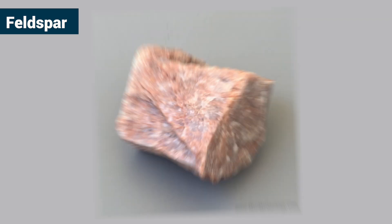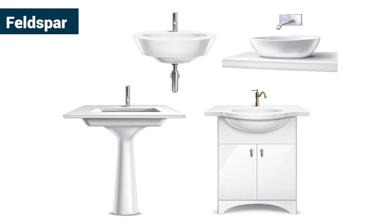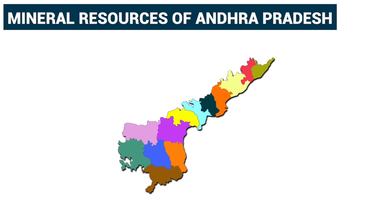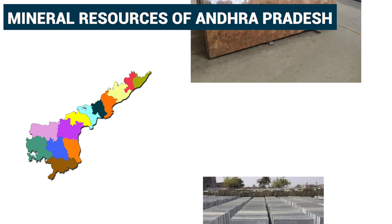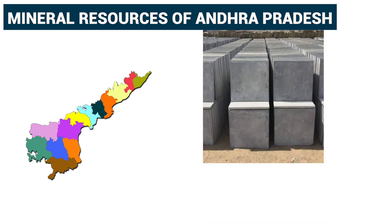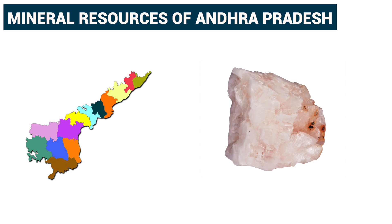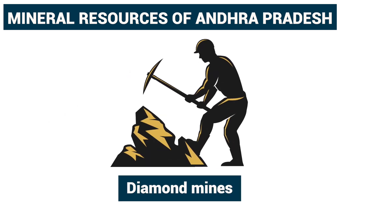Feldspar: A raw material used in making of glass and ceramic ware like wash basins. Mineral resources of Andhra Pradesh: Andhra Pradesh is very rich in mineral resources. It is a large producer of granites, karappa stones, mineral oil and gas, limestone and dolomite. Andhra Pradesh is also famous for diamond mines.